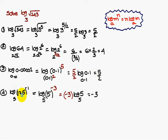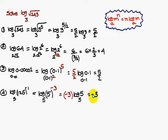Similarly, log 125 to the power minus 1, base 5. Write 125 as 5 cubed, so this becomes log of 5 to the power minus 3, base 5. That is nothing but minus 3 times log 5 base 5. Since log 5 base 5 equals 1, the answer is minus 3.